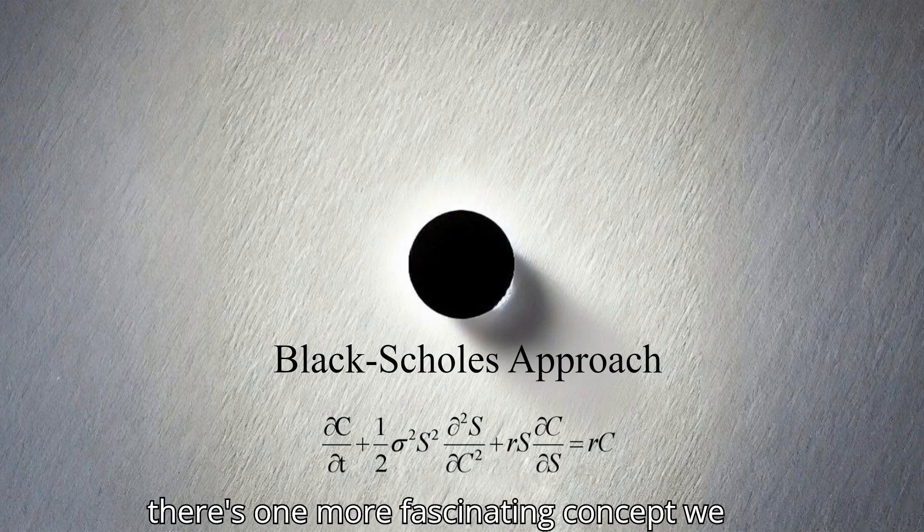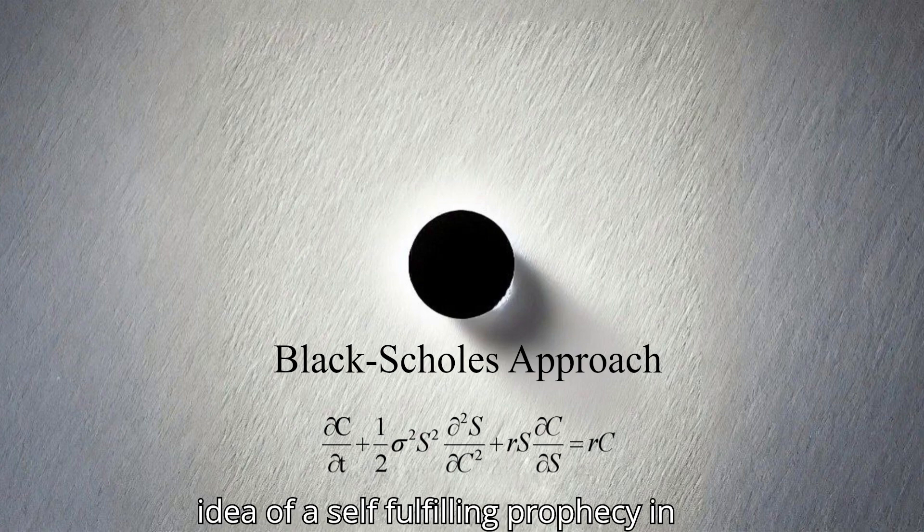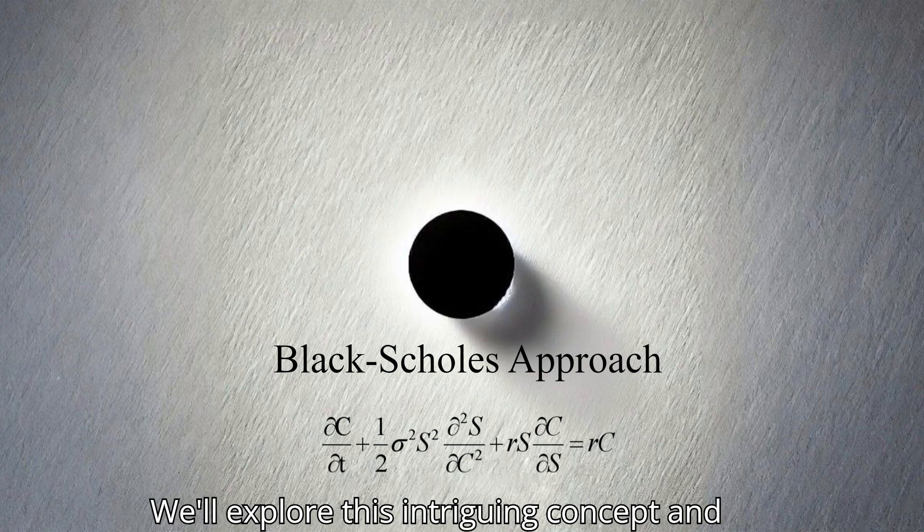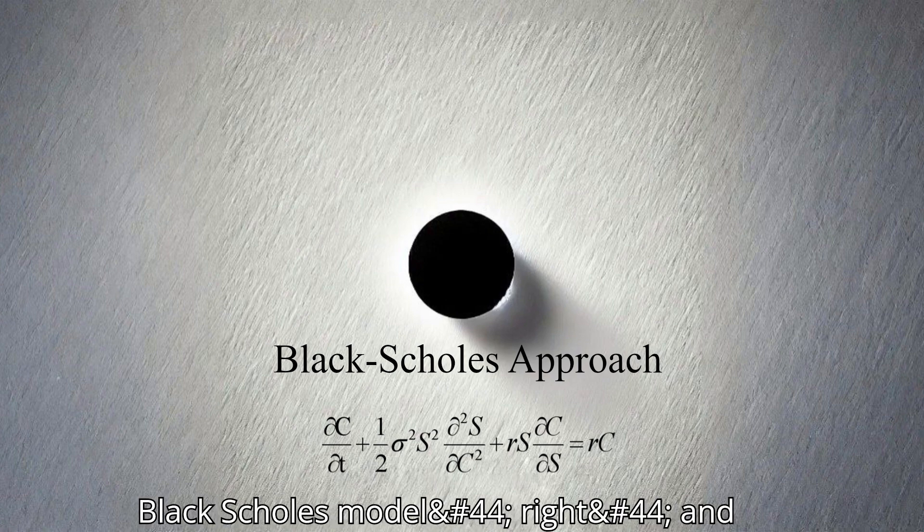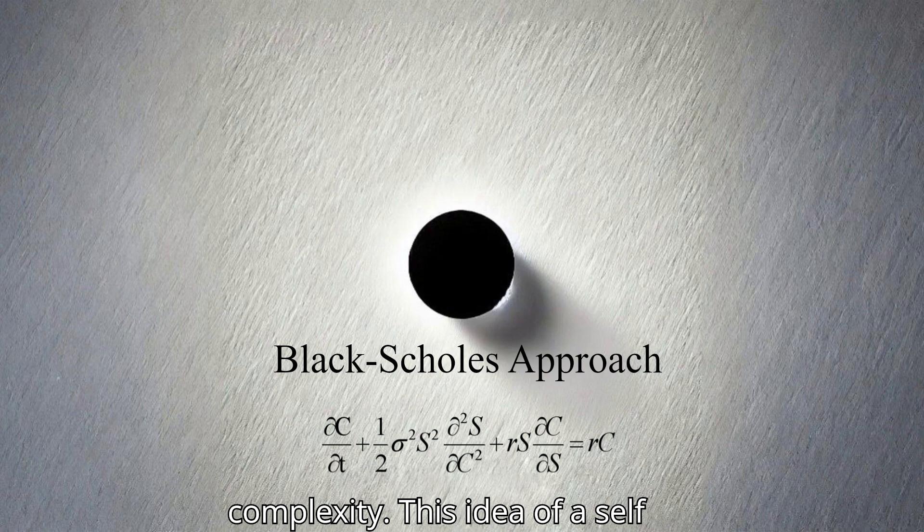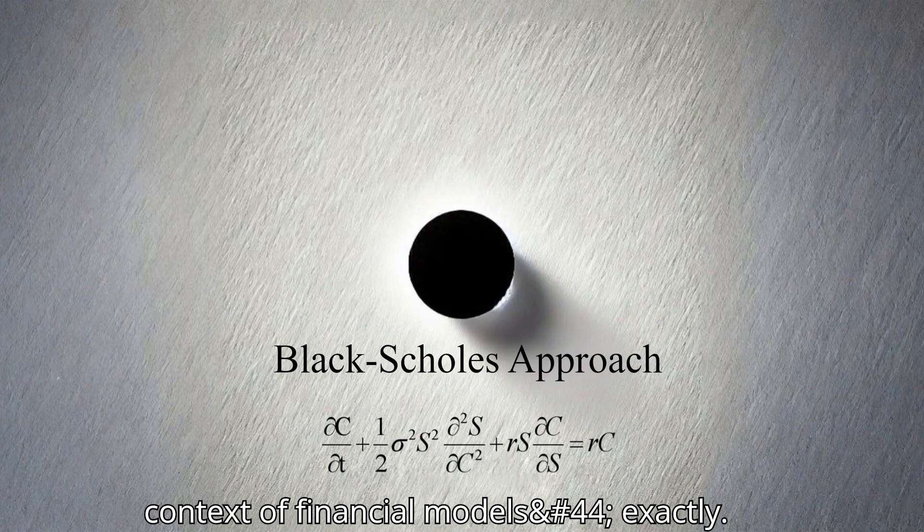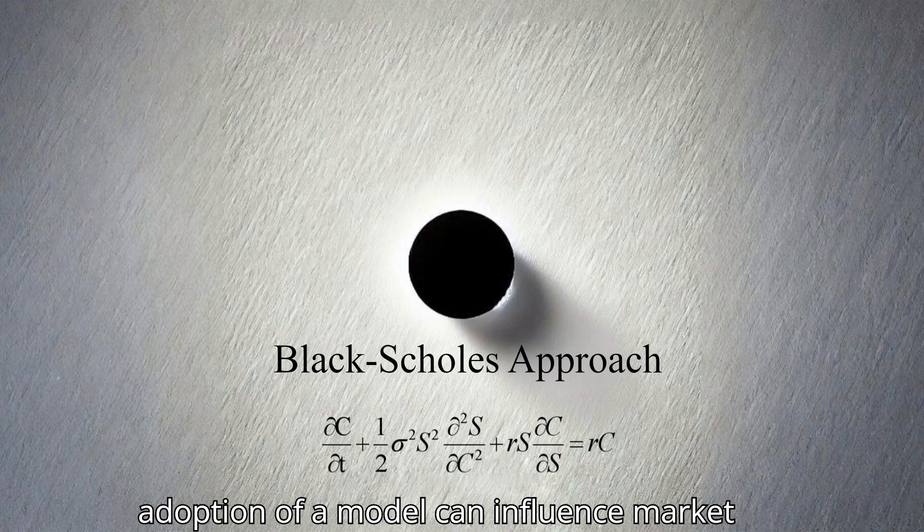Speaking of learning and discovery, there's one more fascinating concept we need to delve into, one that highlights the intricate relationship between models and reality: the idea of a self-fulfilling prophecy in financial markets. We'll explore this intriguing concept and its implications for the Black-Scholes model in our final segment. So we've been talking about the limitations of the Black-Scholes model and how researchers are working to refine it. But there's this other layer of complexity, this idea of a self-fulfilling prophecy in the context of financial models. Can you expand on that?